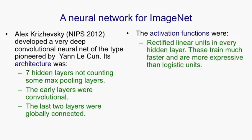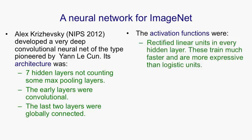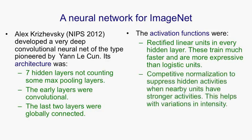The activation functions were rectified linear units in every hidden layer. These train much faster than logistic units and are more expressive — most people seriously applying deep neural networks to real images for object recognition have now switched to rectified linear units. Competitive normalisation within a layer is also used to suppress a unit's activity if other units looking at nearby localities are very active, which helps a lot with variations in intensity.